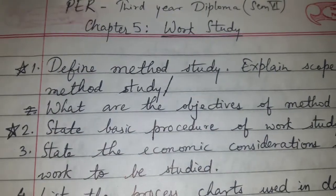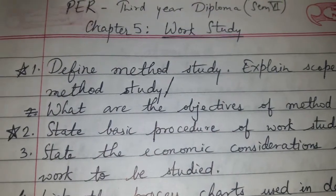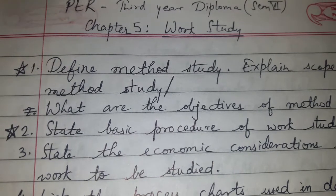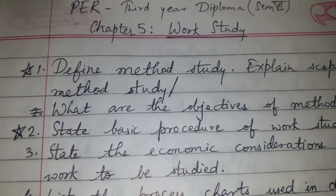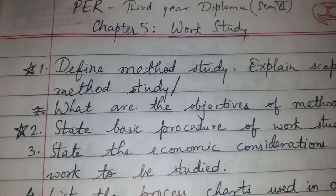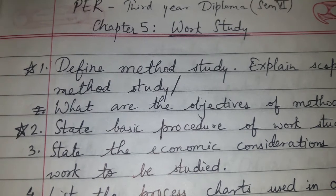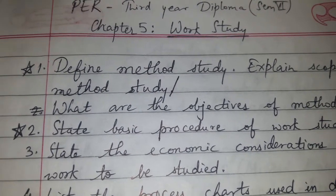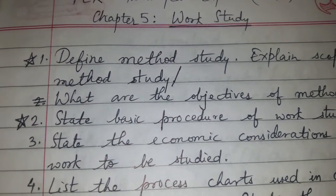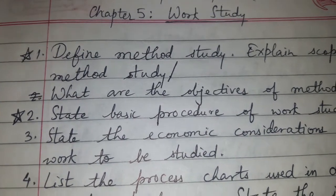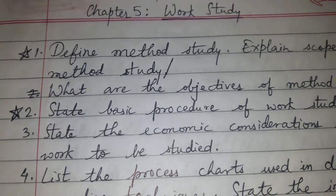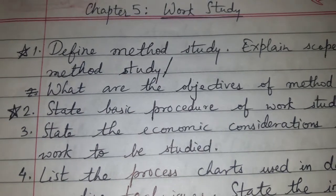Friends, today's topic of discussion is Chapter Number 5: Work Study — the question bank for the subject PER, that is Production Engineering and Robotics, for third year diploma semester 6. All the questions are important, but those marked with a star are more important.